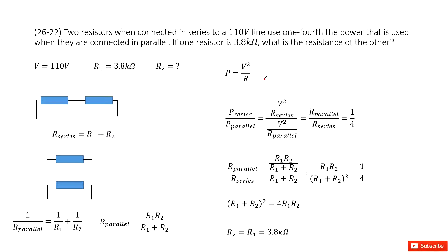Chapter 26 is about DC circuits. You can see there we have two resistors. One is R1, given as 3.8 kΩ. R2 we don't know yet — we need to find it. These two resistors are connected in series or parallel with the power supply, which is 110 volts. It tells us the power ratio for the series connection and the parallel connection is 1 over 4.